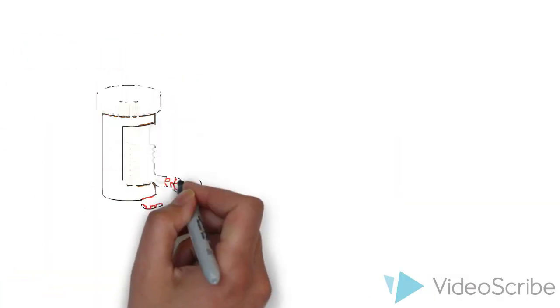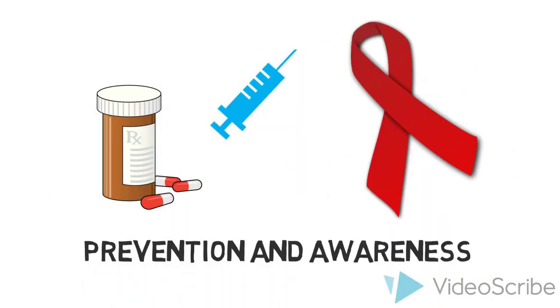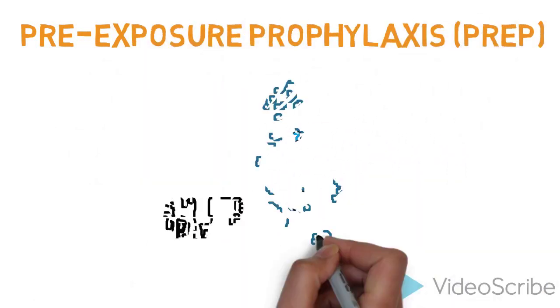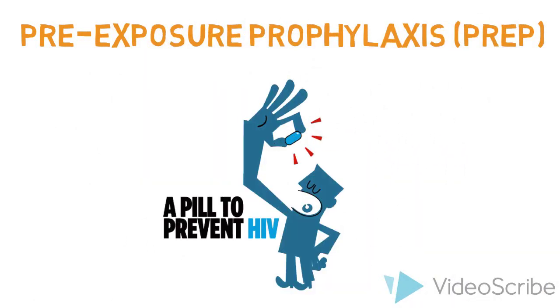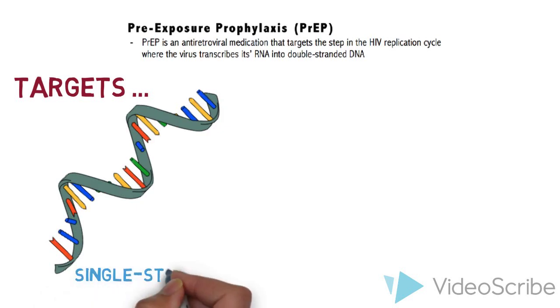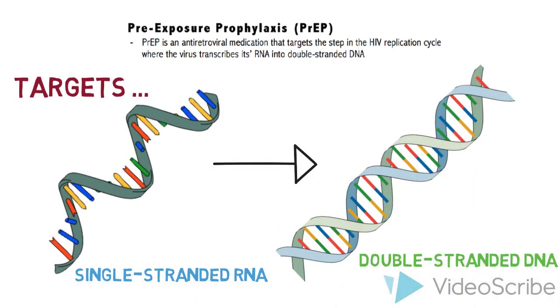Since there is no cure for HIV, the best way of slowing down the AIDS epidemic is through prevention and awareness. One of the most promising strategies in preventing HIV-1 infections is pre-exposure prophylaxis, or PrEP. PrEP is an antiretroviral medication that targets the step in the HIV replication cycle where the virus transcribes its RNA into double-stranded DNA.